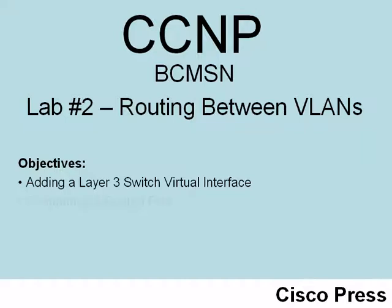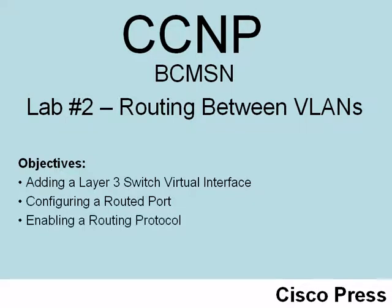Another approach is to take a layer 2 switch port and convert it into a layer 3 routed port. By default, when our multi-layer switch — specifically the Catalyst 3550 in this lab — comes up, all interfaces are acting as layer 2 switch ports. We can tell one of these interfaces not to act like a switch port and it will start acting like a routed port. We can then assign an IP address to that layer 3 routed port. On the 3550, by default, IP routing is not enabled.